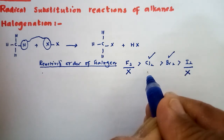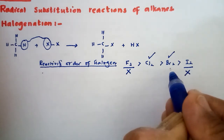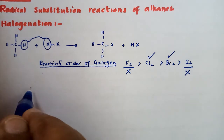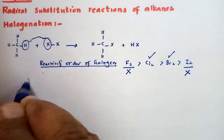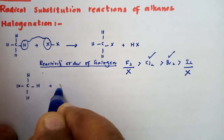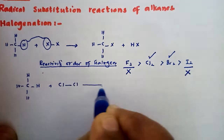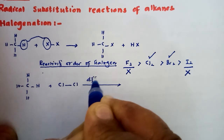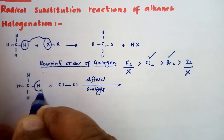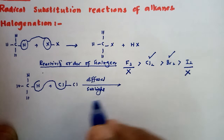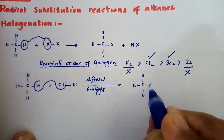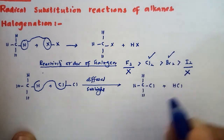So halogenation reaction is done either with chlorine or with bromine. When the reaction is done with chlorine, it is called chlorination; when done with bromine, it is called bromination. If we react methane with chlorine in the presence of diffused sunlight, one hydrogen of methane is replaced by chlorine, resulting in the formation of chloromethane and HCl.